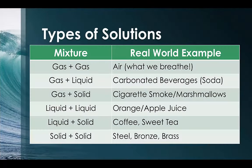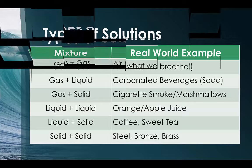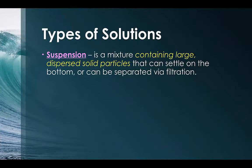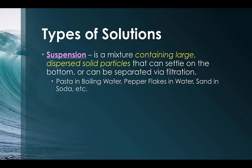Aqueous solutions are not the only type of solutions we have. A suspension is a mixture containing large dispersed solid particles that can settle on the bottom or be separated via filtration — think of a snow globe or pasta in boiling water. If you shine light through a suspension, it's not going to pass all the way through because the light hits the very large particles that eventually settle on the bottom.